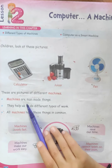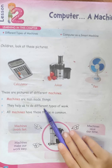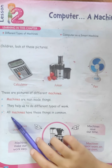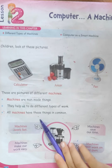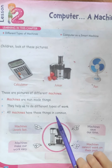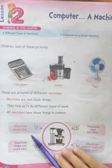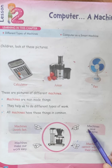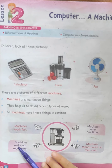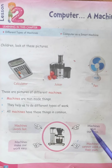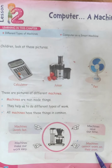Machines are man-made things. They help us to do different types of work. All machines have these things in common: machines work fast, machines save our time, machines make our work easy, and machines cannot work on their own.